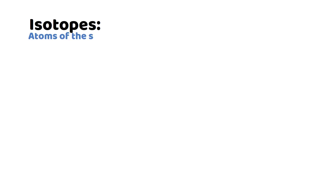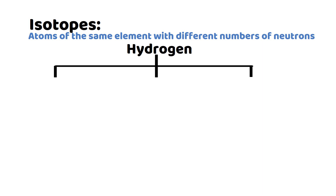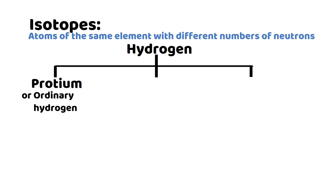Isotopes are atoms of the same element with different numbers of neutrons. For example, the element hydrogen has three isotopes. The first one is called protium, or ordinary hydrogen. This isotope of hydrogen is shown by the symbol H-1-1. It has one proton and no neutron in the nucleus, while one electron is present in the first shell.